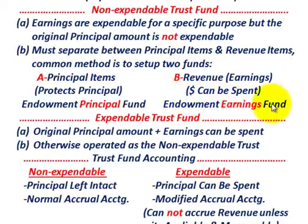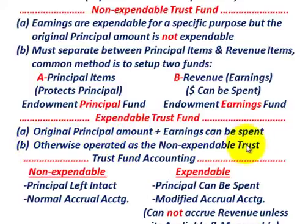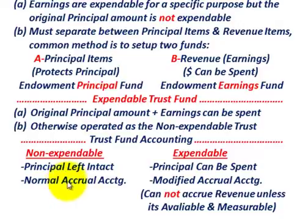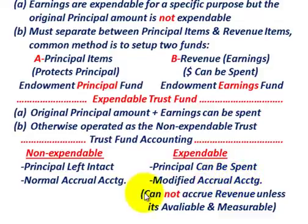For the expendable trust fund, the original principal amount plus any earnings can be spent. In terms of accounting, the non-expendable trust uses normal accrual accounting, while the expendable trust uses modified accrual accounting. With modified accrual accounting, you cannot accrue revenues unless they are available and measurable, so you'll have deferred revenues.